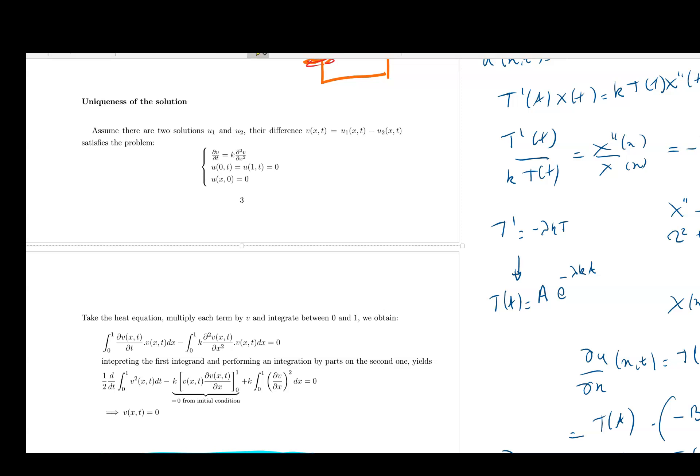And finally, let's say a quick word about the uniqueness of the solution that we have just found. So as usual, when you want to show uniqueness, you assume you have two solutions and we will get to a contradiction or to something showing that they have to be equal to each other.